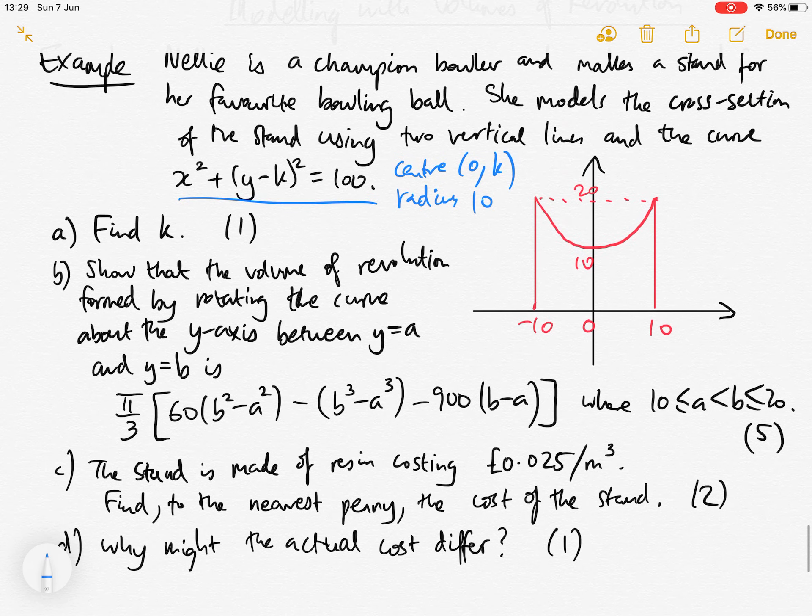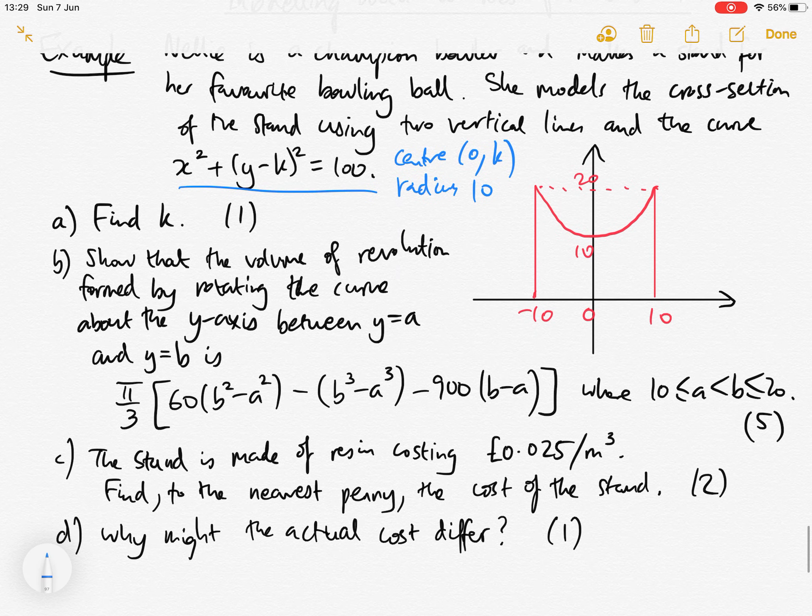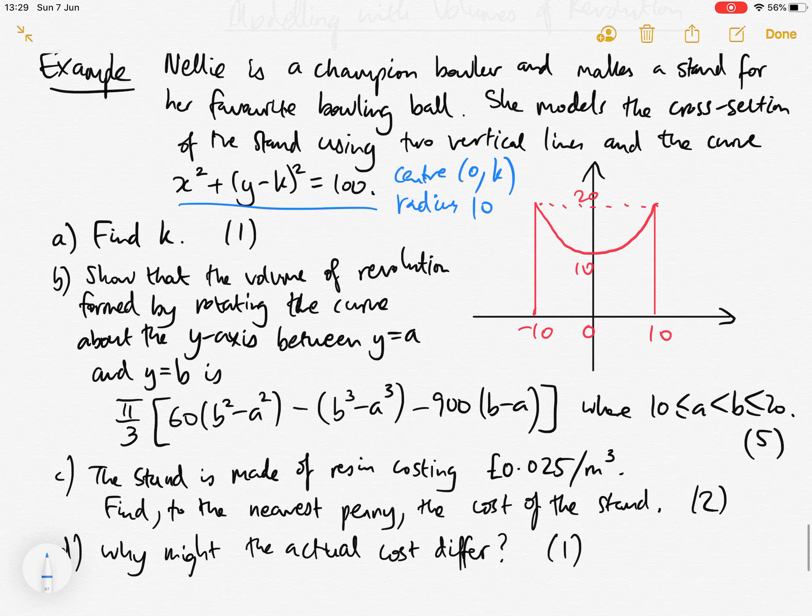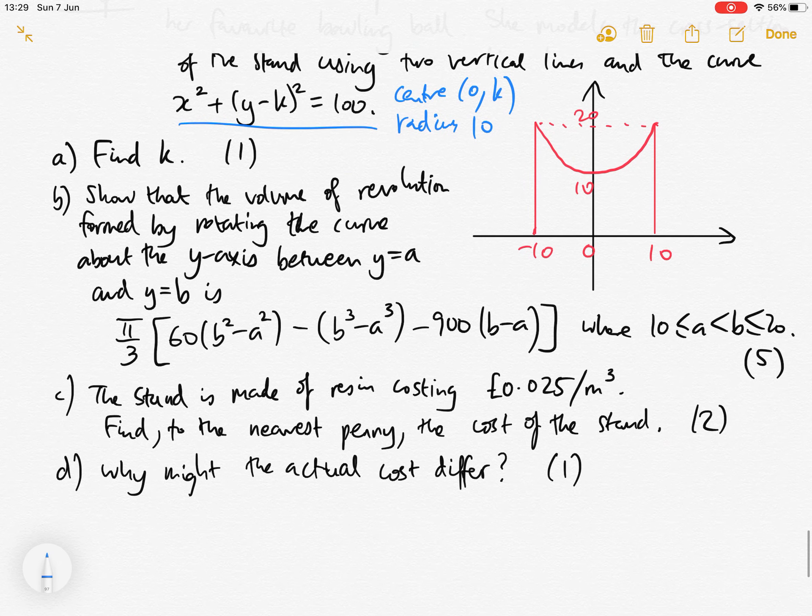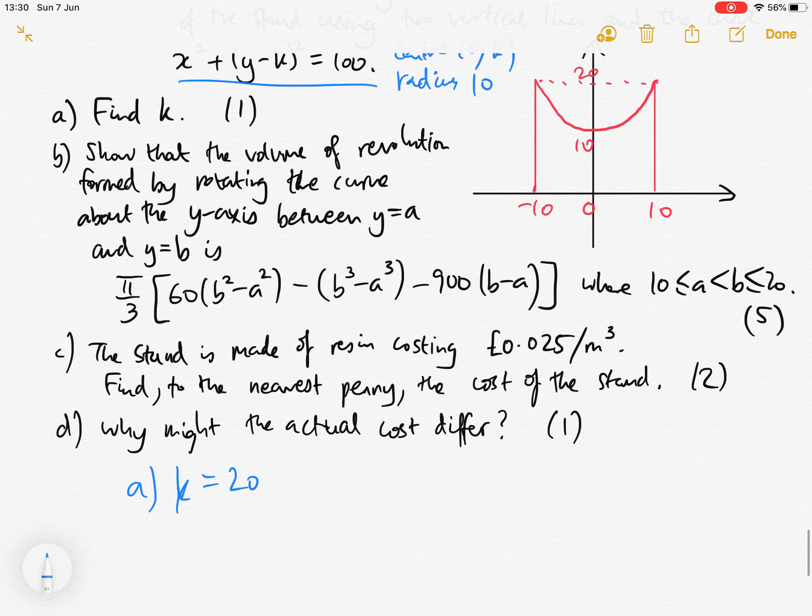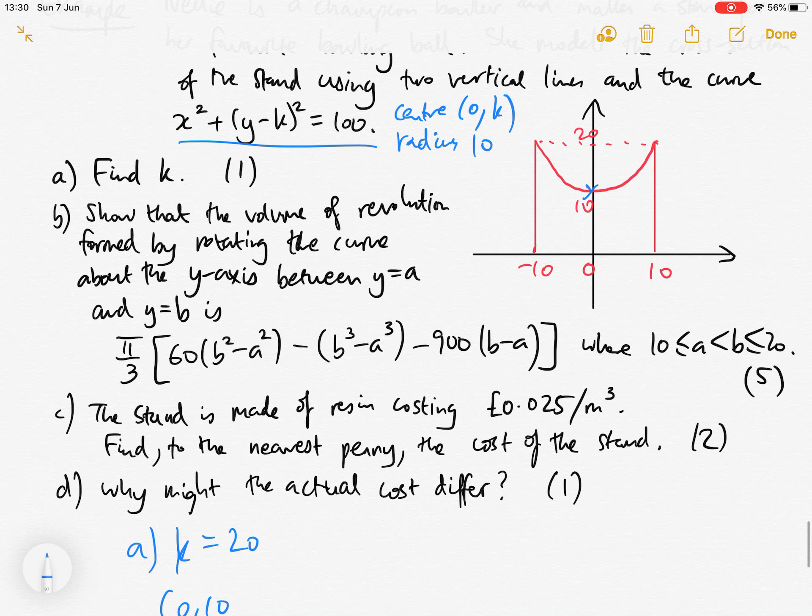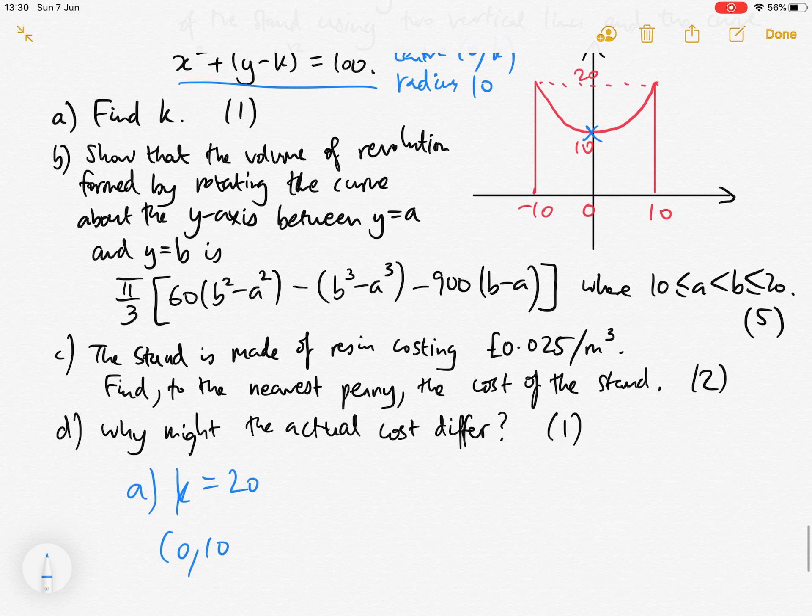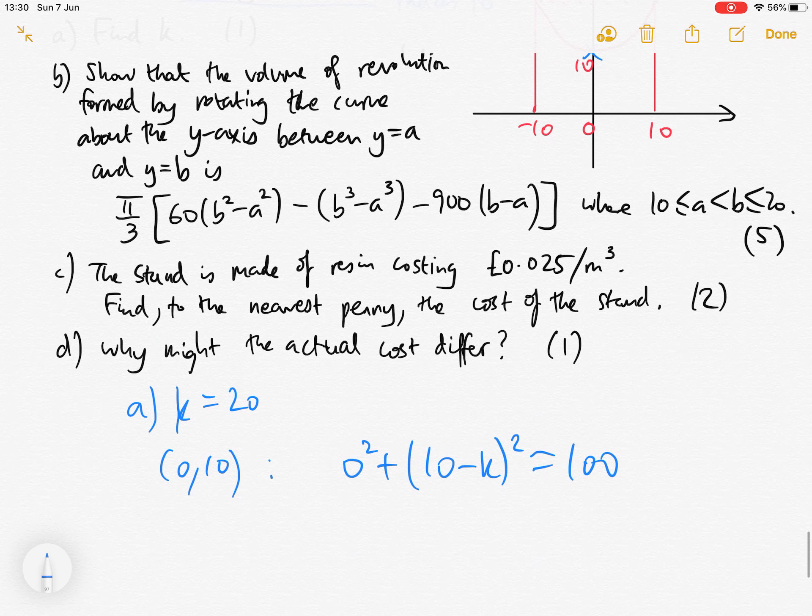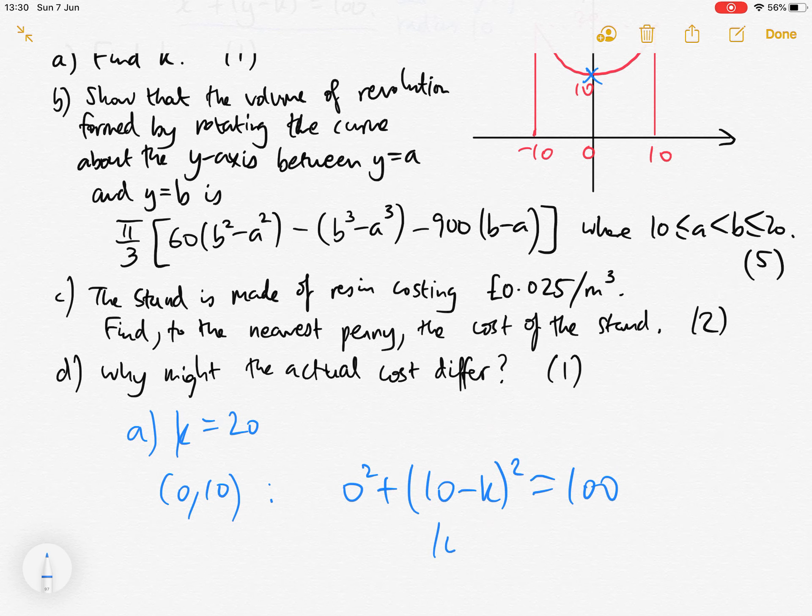There are a number of ways to see it. Maybe you see straight away that k is 20, but if not, you could substitute the point 0, 10 into this equation and get 0 squared plus 10 minus k squared equals 100.